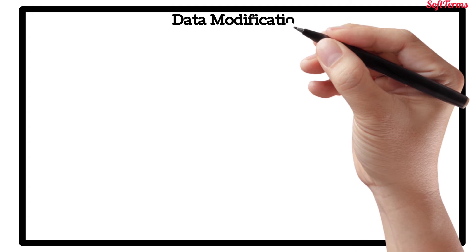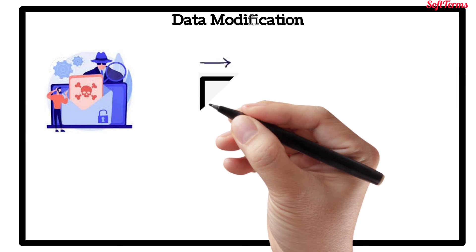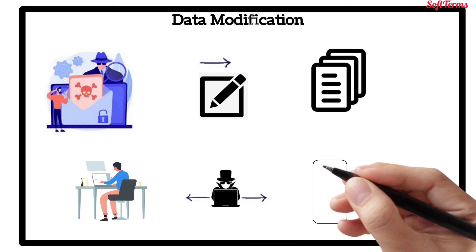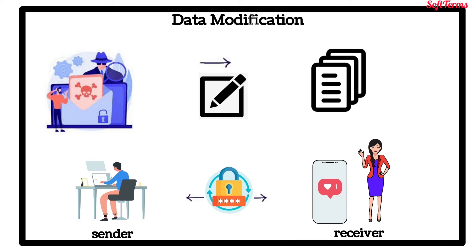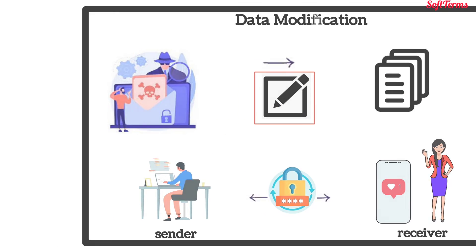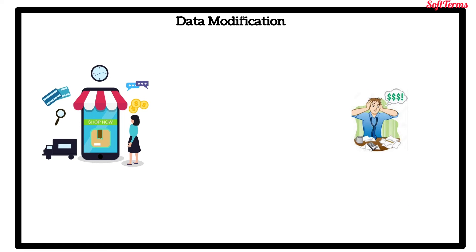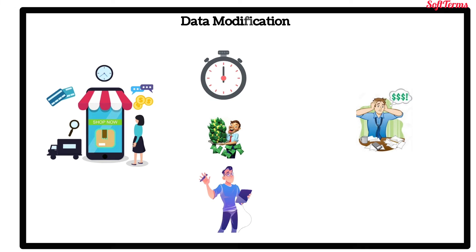Next is data modification. After an attacker has read the data, the next logical step is to alter it. An attacker can modify the data in a packet without the knowledge of the sender or receiver, even if you do not require security of all communication. You do not want any messages to be modified in transit. For example, if you are exchanging purchases and acquisitions, you do not want items, amounts, or billing information to be modified.